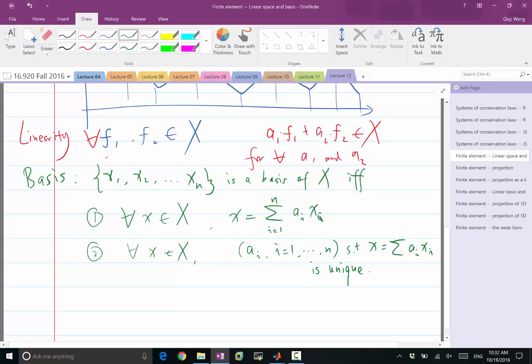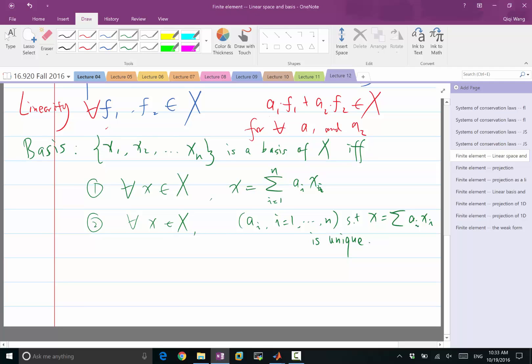So you can't find two different set of a i's that give you the same x. For example, this precludes you from having a basis in which xn can be represented as a linear combination of x1, x2, to xn minus 1.